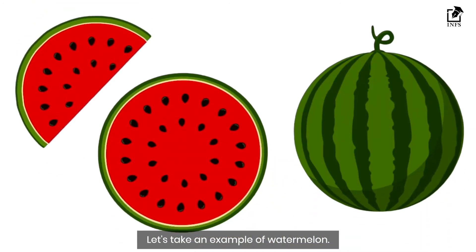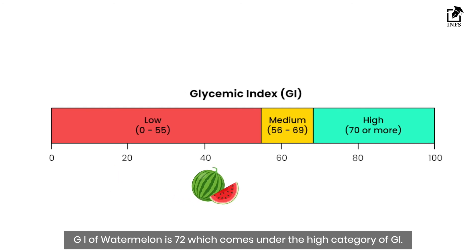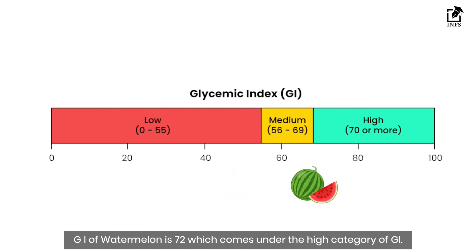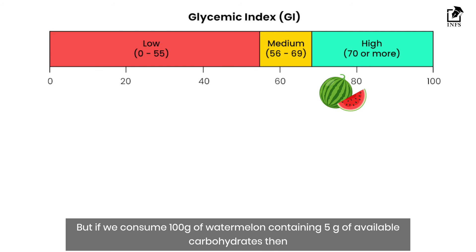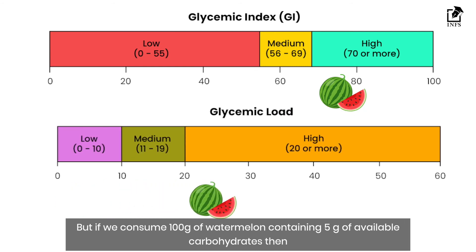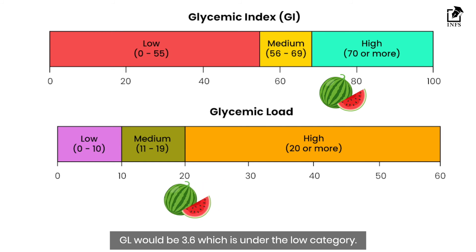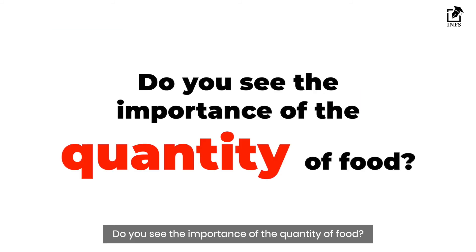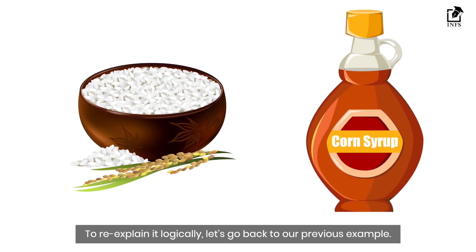Let's take the example of watermelon. The GI of watermelon is 72, which falls under the high category. But if we consume 100 grams of watermelon containing only 5 grams of available carbohydrates, the GL would be 3.6, which is in the low category. This shows the importance of factoring in the quantity of food consumed.